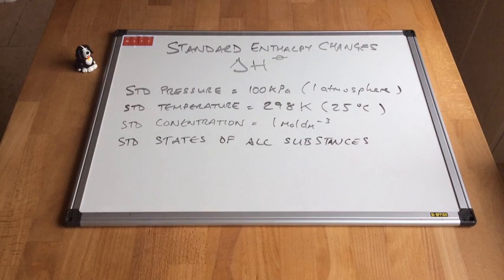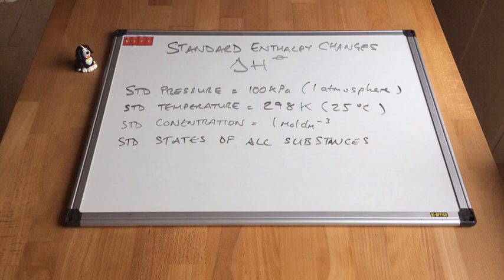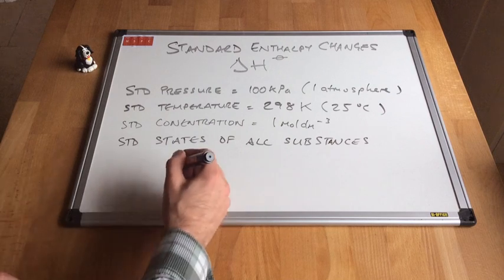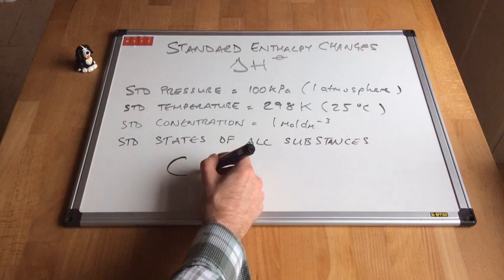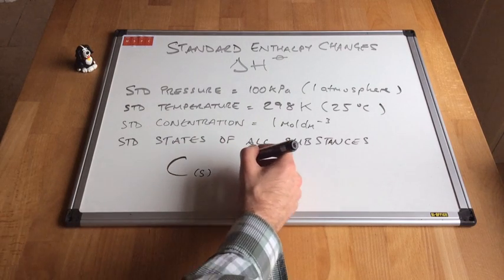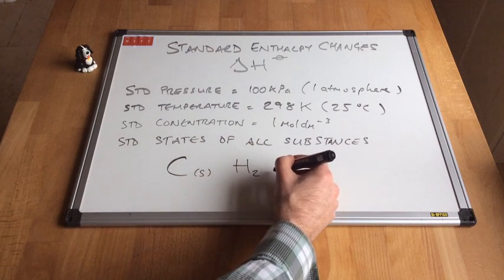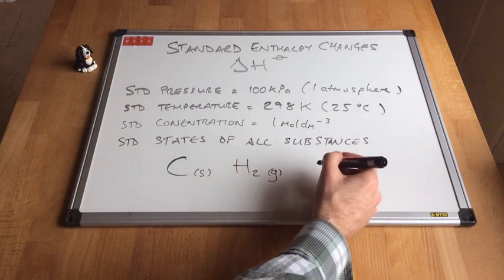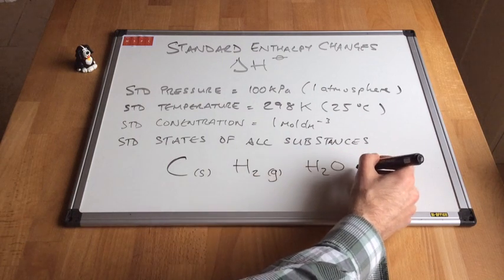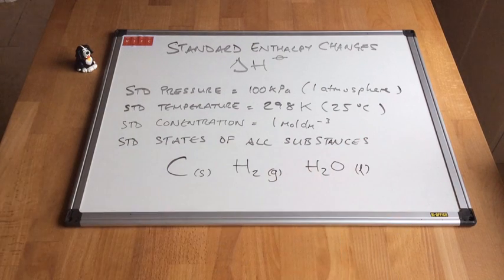All chemicals involved in the chemical reaction must be in their standard states — the state they would be in under standard conditions. For example, carbon is obviously a solid under standard conditions, hydrogen is a gas, and water is a liquid. So those are their standard states.